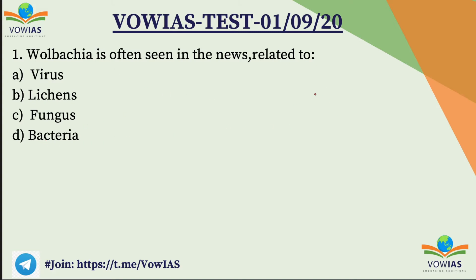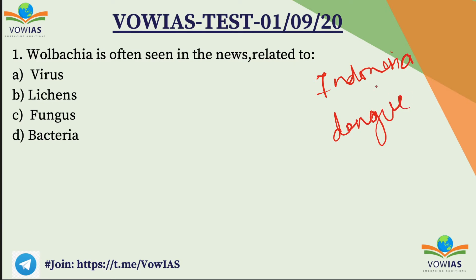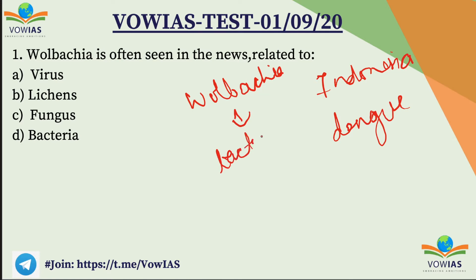Now what is the context? Indonesia was affected by dengue. What did Indonesia do? It introduced a bacteria — the Wolbachia bacterium. It is a bacterium and they introduced this bacterium into their mosquitoes.